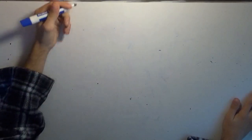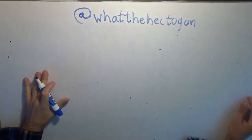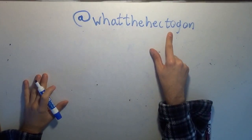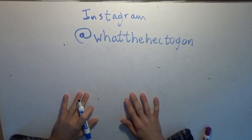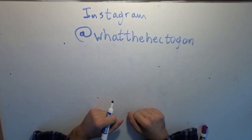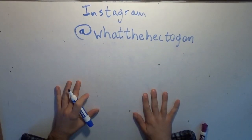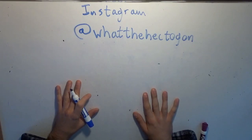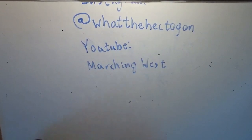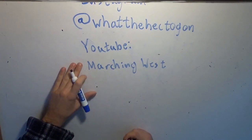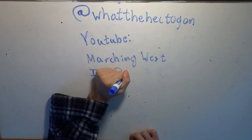I have an Instagram page for the channel at whatthehectagon — spelled correctly, unlike my email where I spelled hectagon with an A when it's an O. So whatthehectagon on Instagram. I post channel updates there, books I'm reading that I recommend, and a collection of vinyl records I like to share. Also, one of my best friends who is very into Dungeons and Dragons has a YouTube channel called Marching West. He does a podcast about Dungeons and Dragons and runs D&D through his Discord server. If you're into Dungeons and Dragons, visit his YouTube channel Marching West, and his Instagram is also at Marching West.